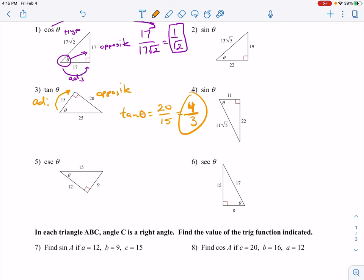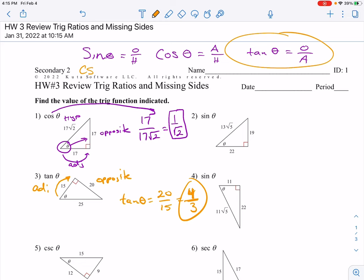Next, we've got cosecant. Oh, I forgot to put that one up here. Cosecant is the hypotenuse over the opposite. Secant is the hypotenuse over the adjacent. And cotangent is the adjacent over the opposite. So it's just a reciprocal or flipped for the previous three fractions.